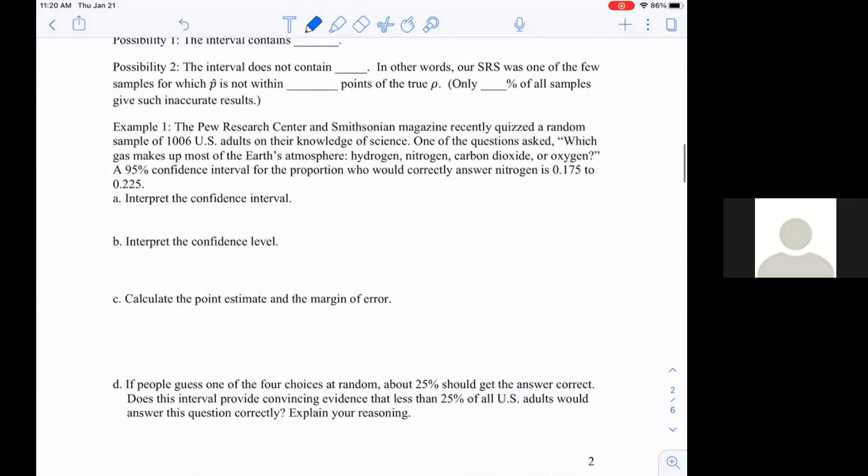Example one: The Pew Research Center and Smithsonian Magazine recently quizzed a random sample of 1006 U.S. adults on their knowledge of science. One question asked which gas makes up most of the Earth's atmosphere: hydrogen, nitrogen, carbon dioxide, or oxygen. A 95 percent confidence interval for the proportion who correctly answer nitrogen is 0.175 to 0.225.